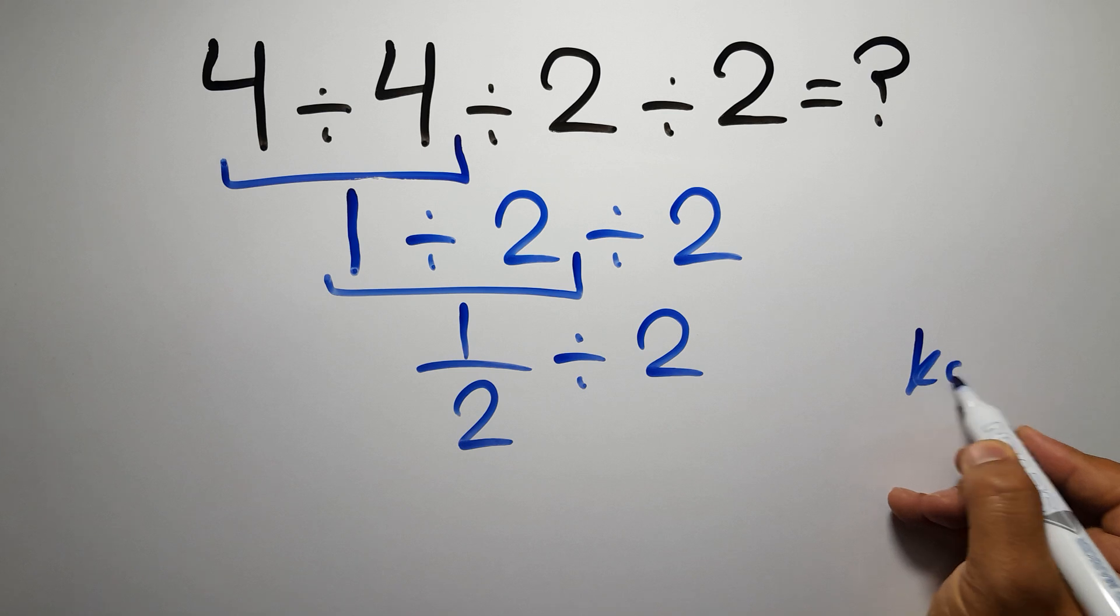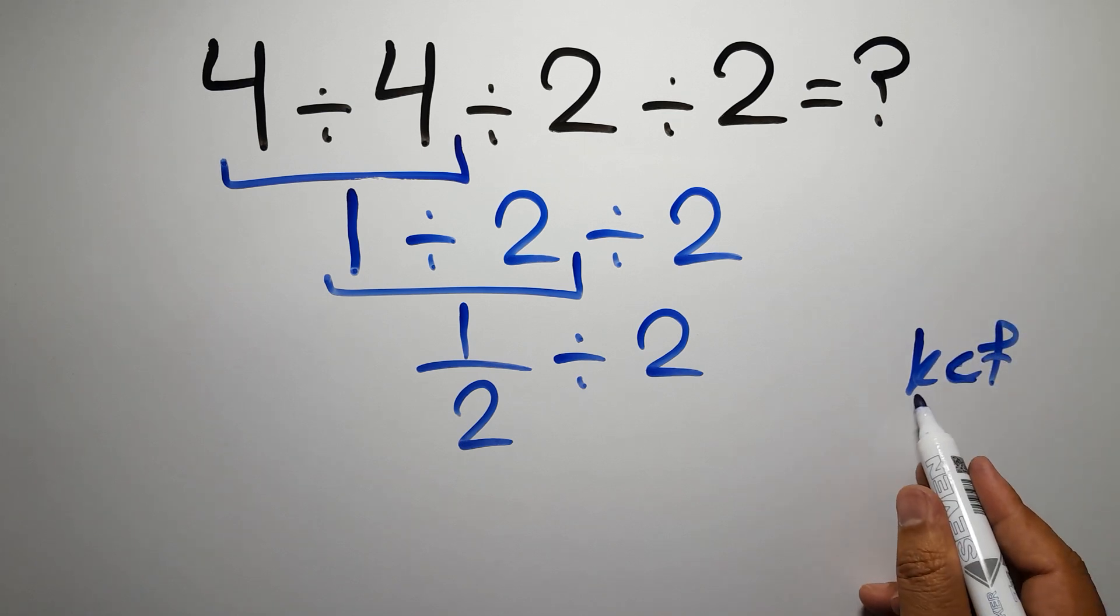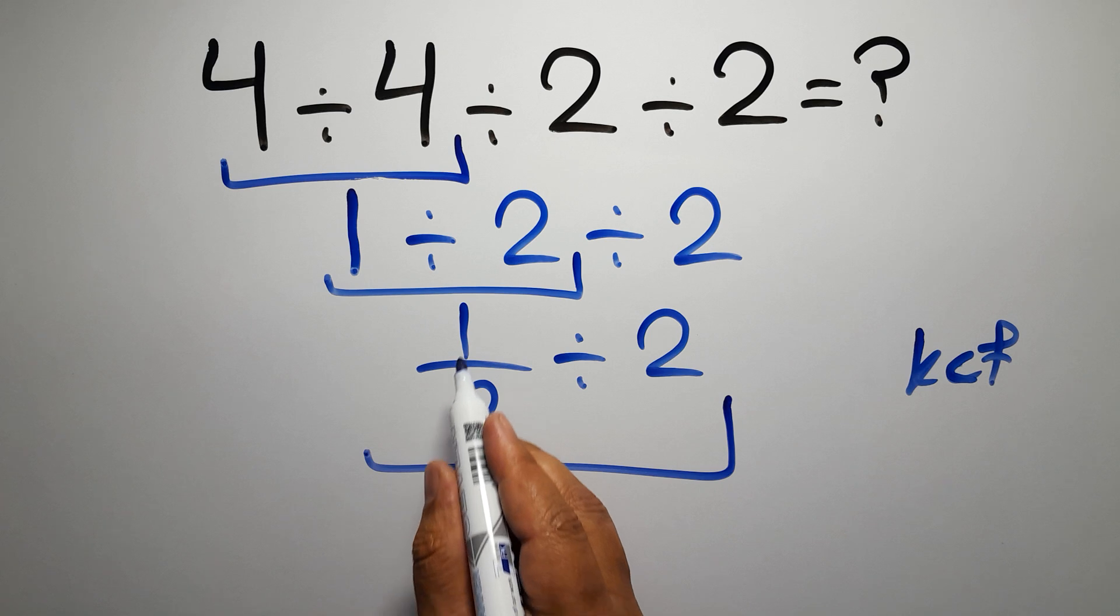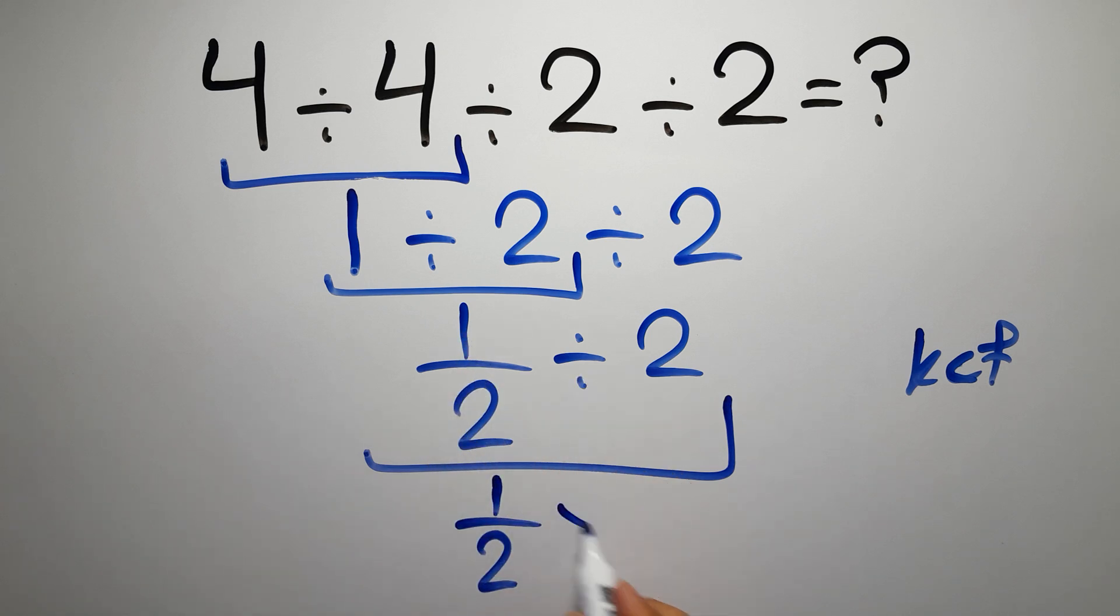Now according to the KCF rule, K stands for keep, C stands for change, and F stands for flip. We can write: keep the first fraction, change division to multiplication, and flip the second fraction. So we have 1 over 2 times 1 over 2.